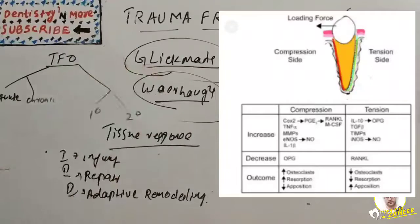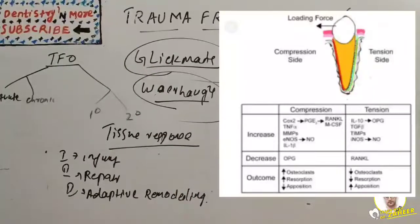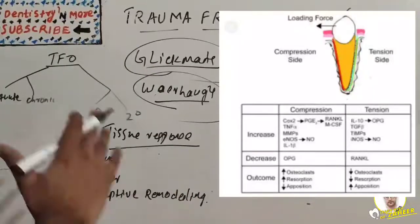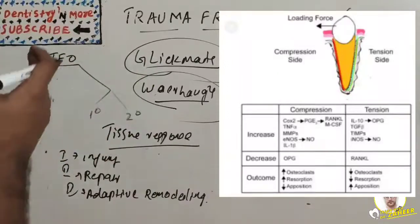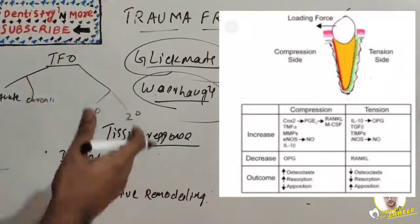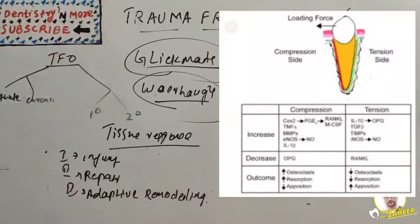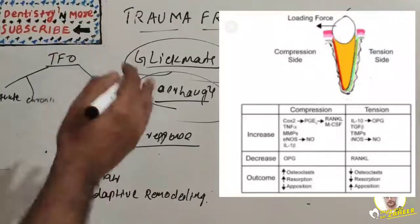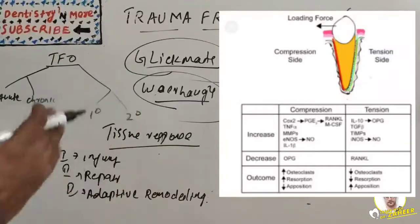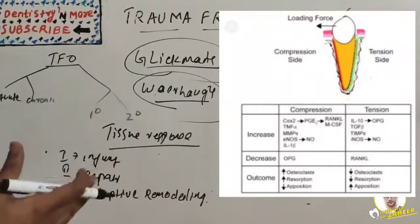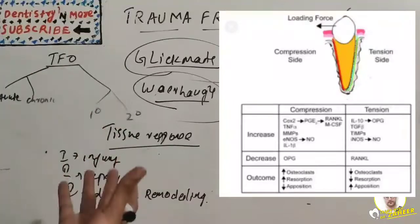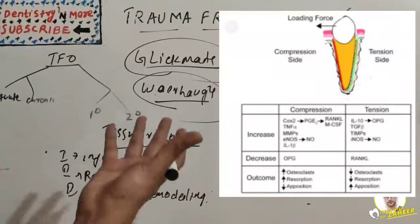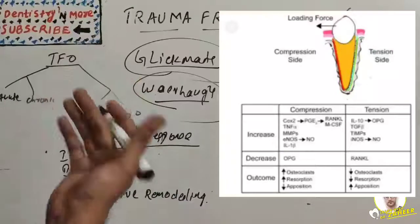Severe tension results in widening of the PDL, thrombosis, hemorrhage, tearing of the PDL, and resorption of alveolar bone. Furcation areas are most susceptible to injury from excessive occlusal forces. Injury to the periodontium produces a temporary depression in mitotic activity and the rate of proliferation of fibroblasts, collagen, and bone formation.